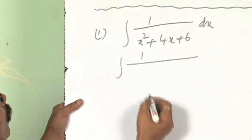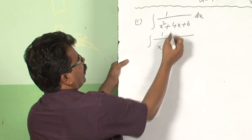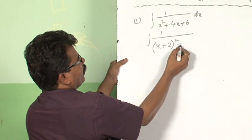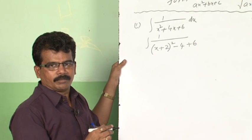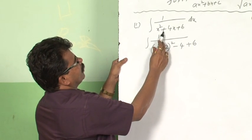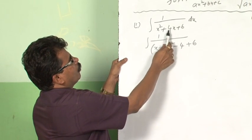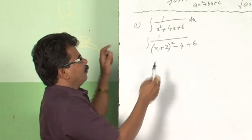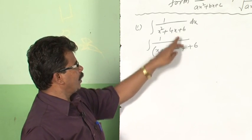If the integrand is of this form, observe how I am applying the completion of square formula. I am writing x plus half of the coefficient of x — the x coefficient is 4, so I take half, that is 2 — make it whole square, then subtract the square of this: 2 square is 4, and write plus 6 as it is. So the expression becomes: x plus 2 whole square minus 4 plus 6, which simplifies to x plus 2 whole square plus 2.